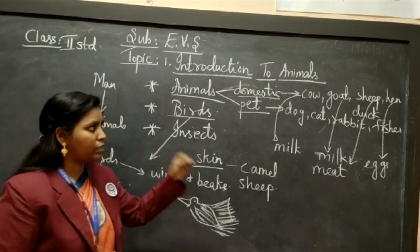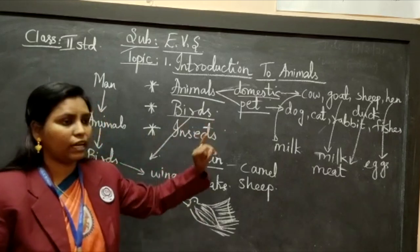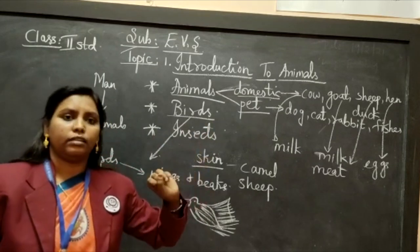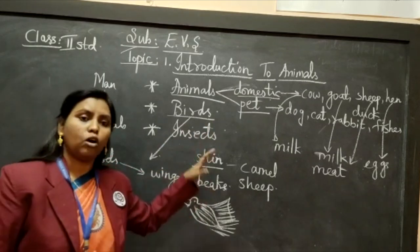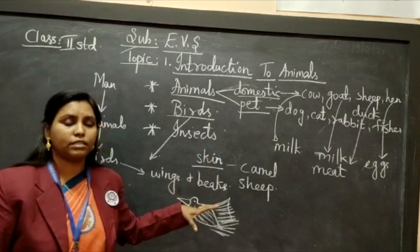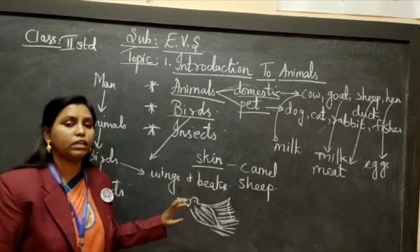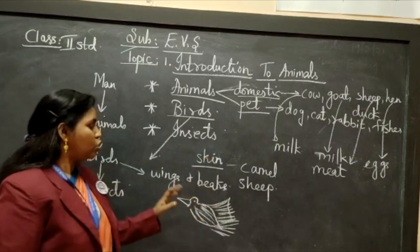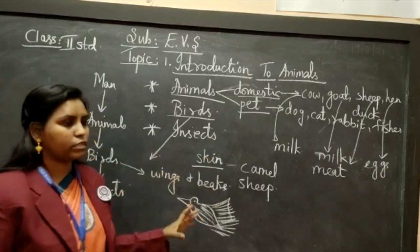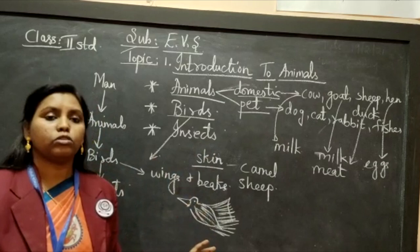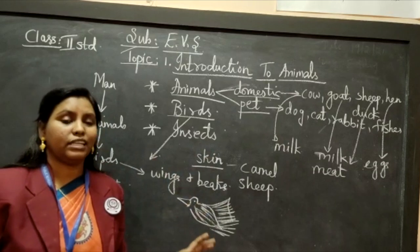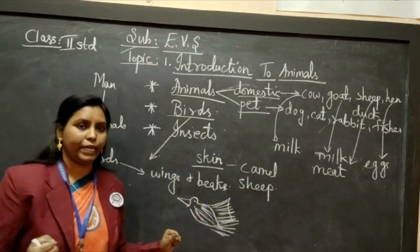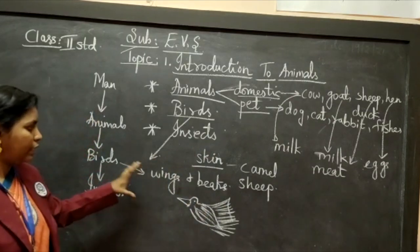What are the birds that help us? Hen, duck, and geese — all these are birds. They are also giving us eggs and meat. So even these birds are helping us in many ways.